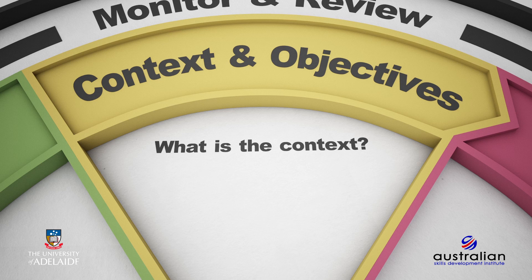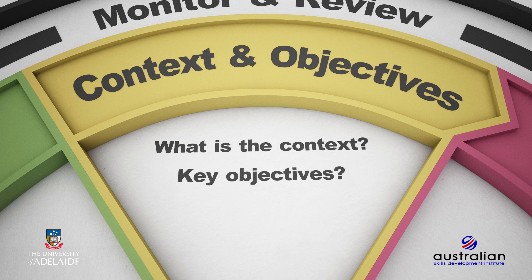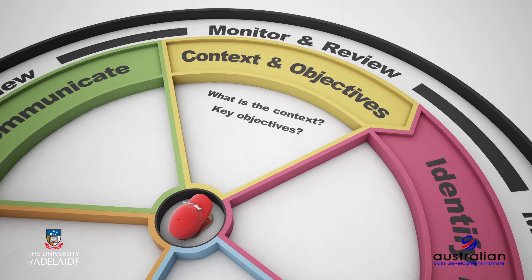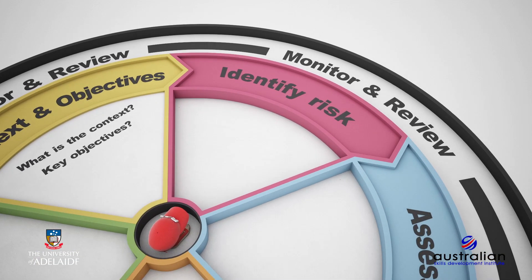In this course, we will apply the process to a project management setting. Once the context has been established, we can develop and agree on the objectives specific to our project. Second, what are the key objectives? You may recall that we defined risk as uncertainty on the achievement of our objectives. Therefore, it stands to reason that before identifying the types of risk or uncertainty we may be faced with, we first have to determine and agree on the project-specific objectives. Once the objectives have been specified, we can move to the second stage of the process.